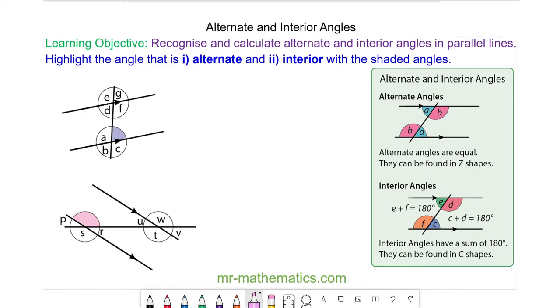Alternate angles appear within a z-shape in parallel lines. So angle A is equal to S and D, and the purple angles are also alternate. So D is equal to this angle which we can call H. So D is equal to H.